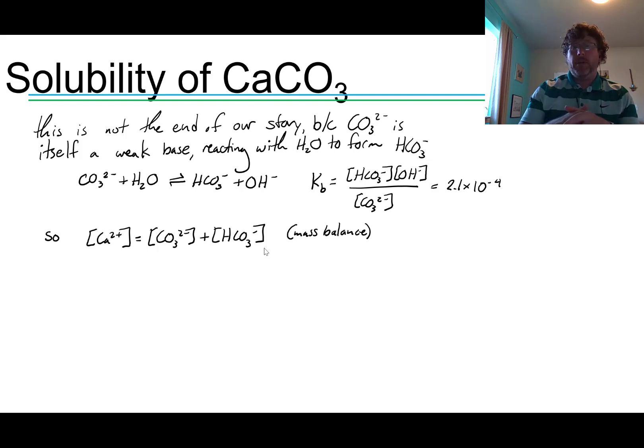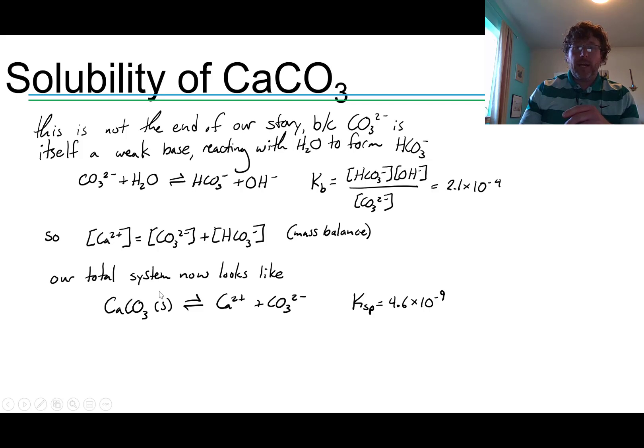So now what we want to figure out is, if we have to consider this equilibrium as well, what will the dissolved calcium concentration be? Because that tells us something about how soluble our poor coral's exoskeletons are in this more acidic ocean that we're making. So our total system now looks like not just the first equilibrium reaction. Calcium carbonate solid reacts equilibrium style to give us calcium 2 plus and carbonate. Ksp equal to 4.6 times 10 to the negative 9th at 25 degrees Celsius. But also we have a second reaction. Carbonate goes on to react with water to make bicarbonate, HCO3 minus, and hydroxide, OH minus. Kb for this reaction is 2.1 times 10 to the negative 4th.